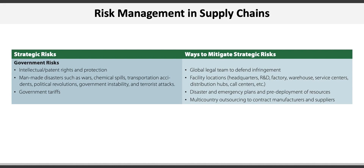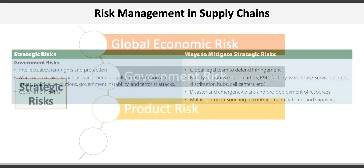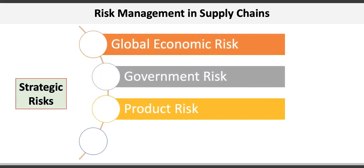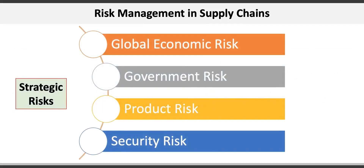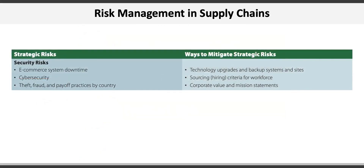The next strategic risk is product risk — examples include modifying a product to meet cultural differences, forecasting errors, or product obsolescence. Ways to mitigate product risk include better planning and forecasting, outsourcing, or even hedging inventory. The last strategic risk is security risk, which can include system downtime, cybersecurity, and theft or fraud. Ways to mitigate security risks include technology upgrades, backup sites, and hiring criteria.